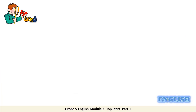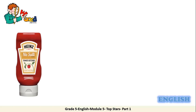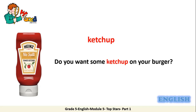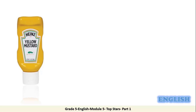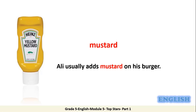Let's start with the first objective: learn six new words and use them correctly. Look at this thing — it is made from tomatoes and we put it on food. Now look at this thing. It is a yellow sauce that we put on food. What do we call it? It is mustard. Ali usually adds mustard on his burger. Which part of speech is the word mustard? It is a noun.